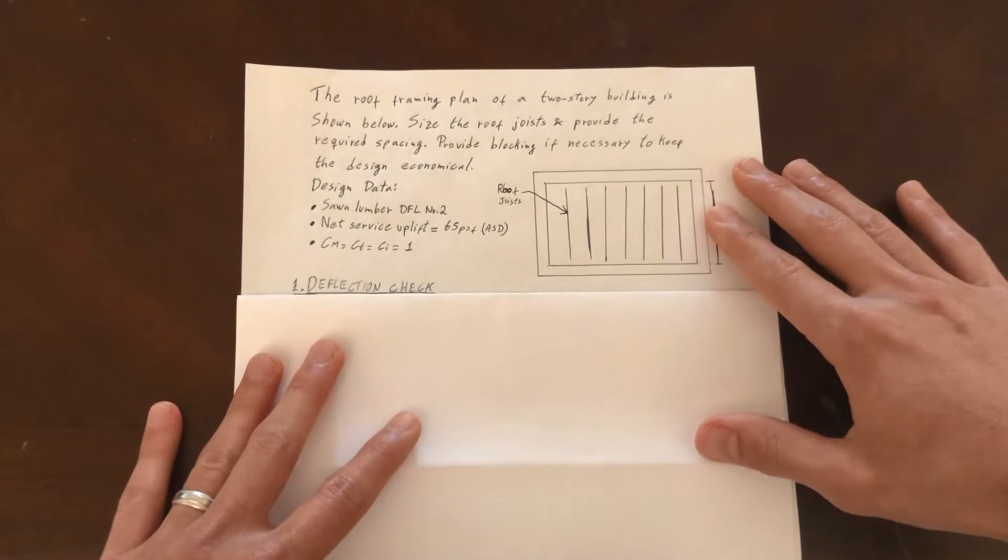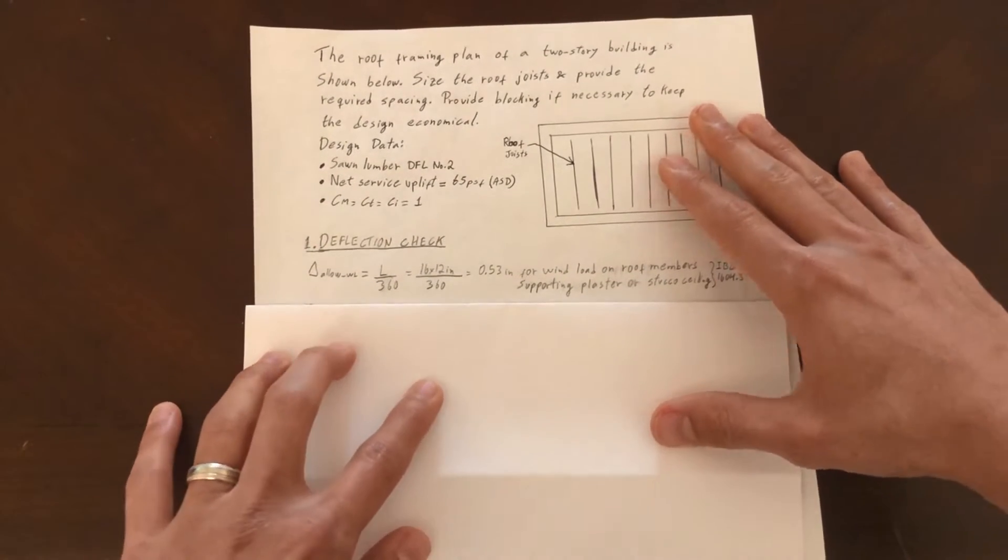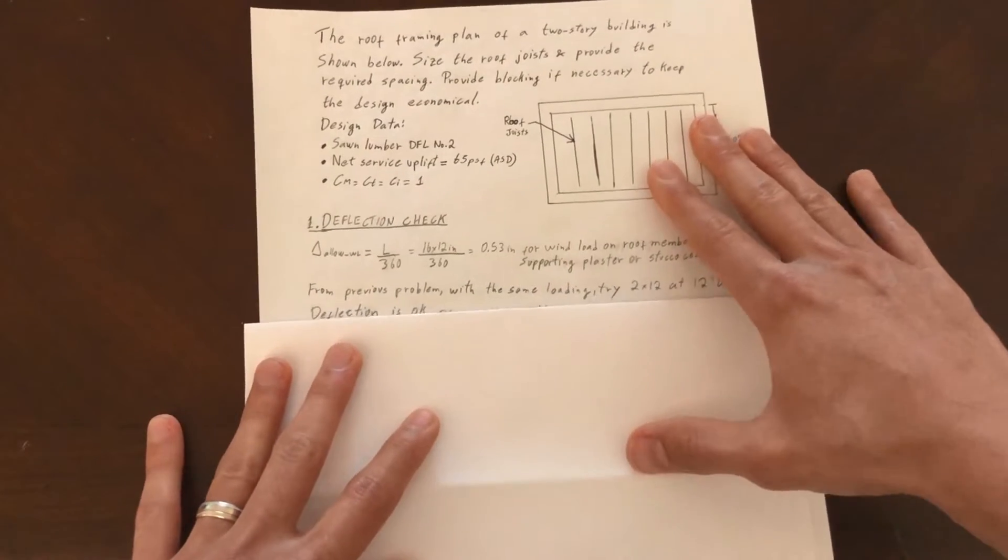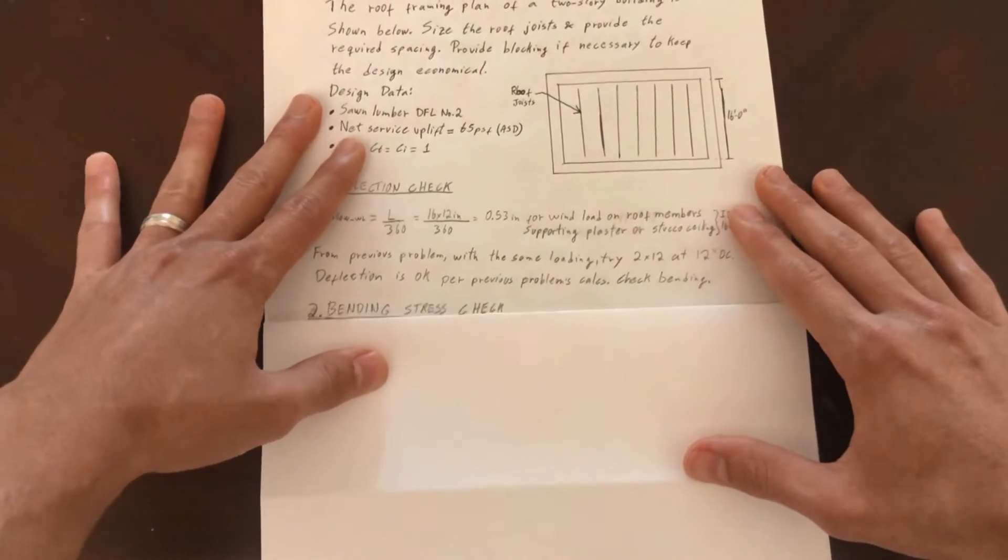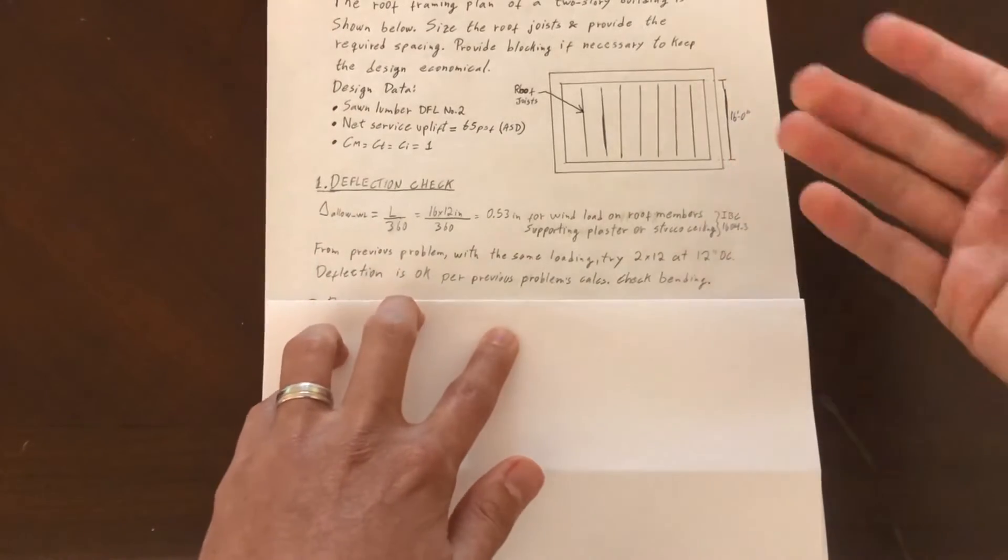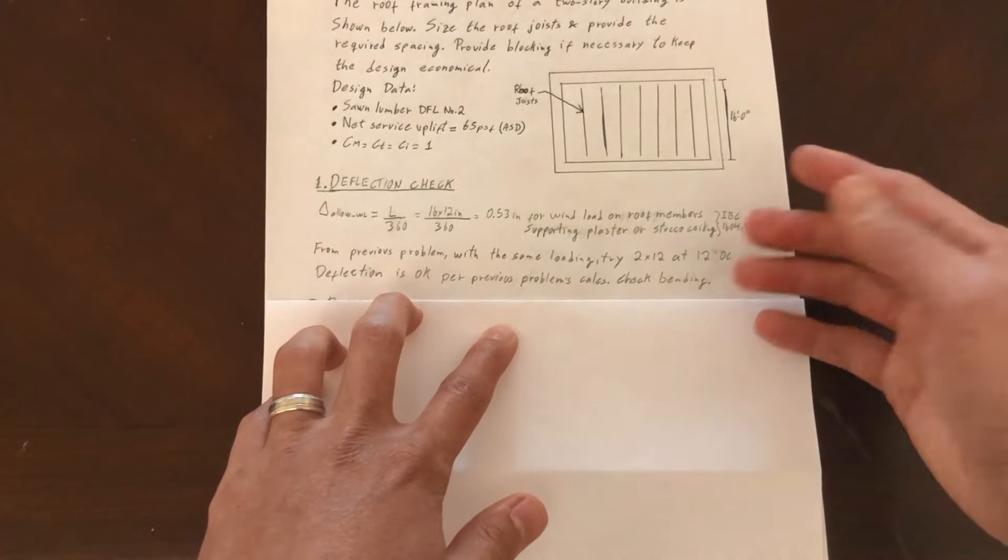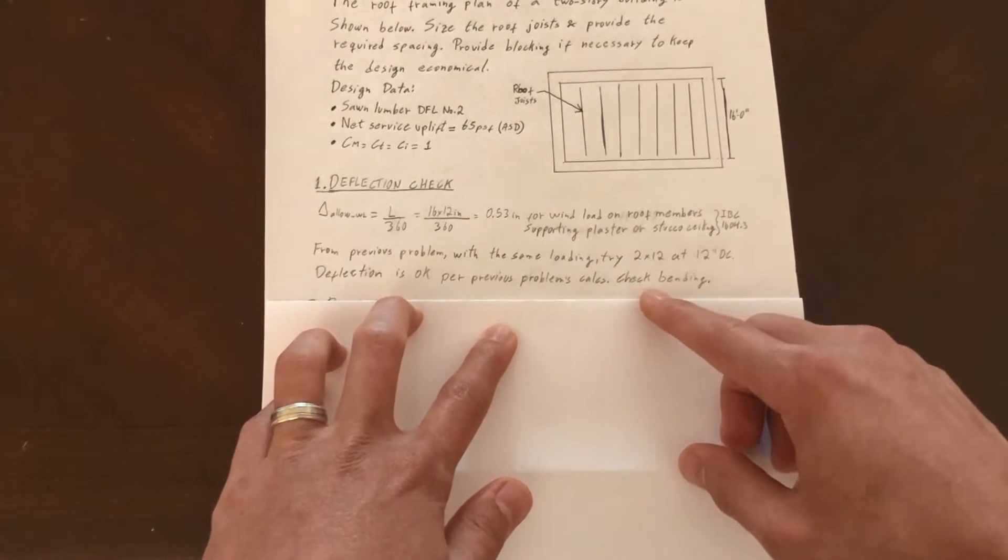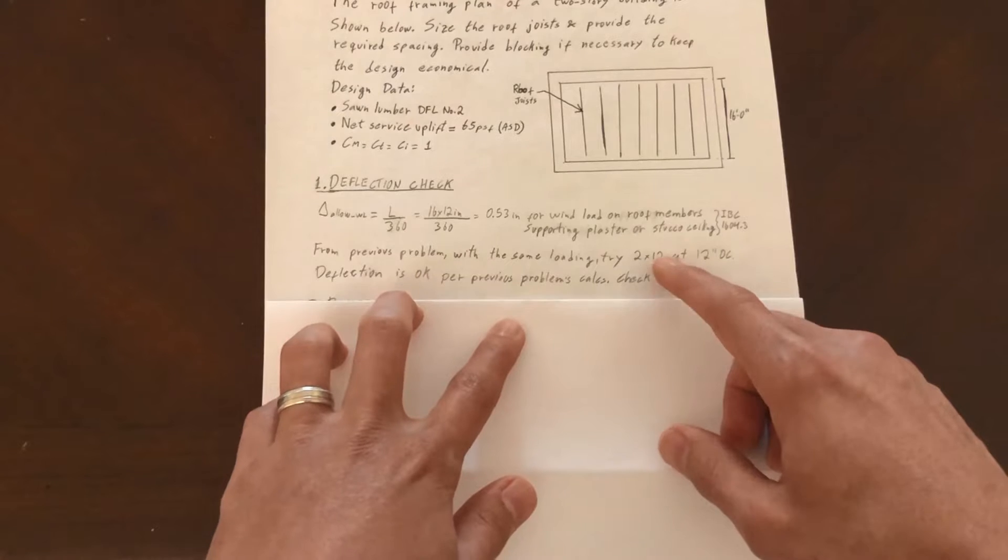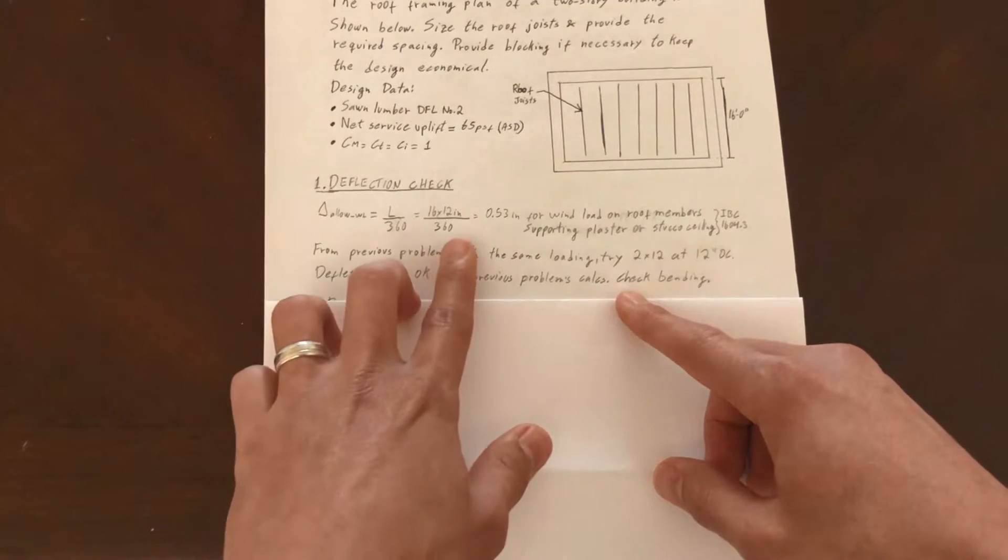The first check that we did last time was deflection. I listed it here for us to note as well. We know that deflection is not going to control in this case, or we know it works by comparison because the loading is the same as last time and the span is the same.